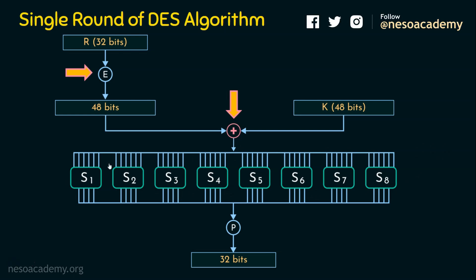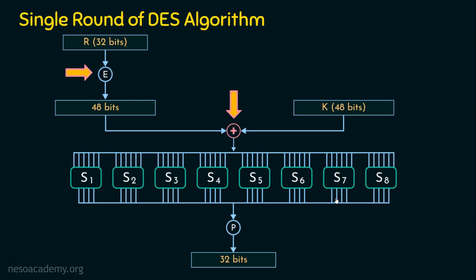There are 8 S-boxes in total. The input to the entire S-box stage is 48 bits. With 8 S-boxes, 48 divided by 8 equals 6, so every S-box takes 6 bits as input and converts those 6 bits into 4 bits. Therefore, the 48-bit output of the XOR operation is given as input to the 8 S-boxes. Each S-box takes 6 bits, and the 8 S-boxes together convert 48 bits into 32 bits (4 bits output per S-box × 8 = 32 bits).